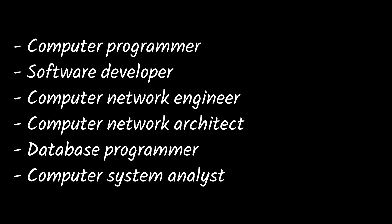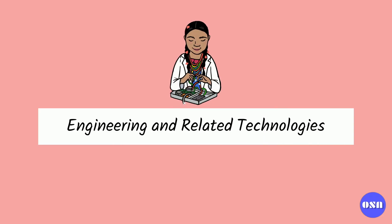The second most popular stream is information technology — IT. If you love computers and want to work in that industry, you can choose courses in this field. For vocational education, there are certificates and diplomas in IT, and for higher education you can do a bachelor's or master's of IT, with specific specializations available. After completing these IT courses, you can work as a programmer, software developer, network engineer, network architect, or database programmer.